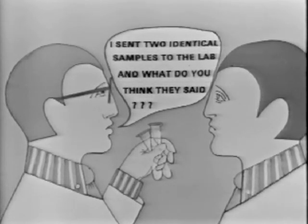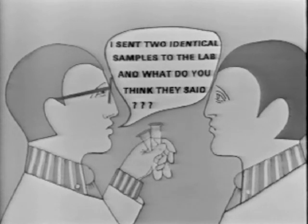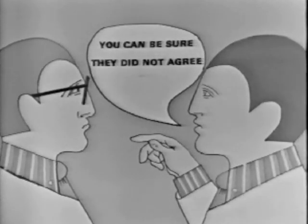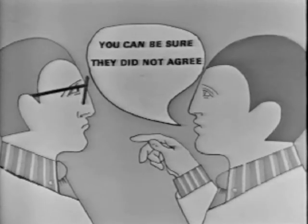But let's turn to a real scientific environment — a laboratory. Here we see two research scientists, and one says to the other, 'I sent two identical samples to the lab, and what do you think they said?' And his cohort replies, 'You can be sure — they did not agree.' We all know very well that there's an intrinsic variability natural to every data-taking process. Control the environment surrounding the data-taking though you will, repeated observations do not agree with one another. And that's what we're going to talk about in this lecture: how observations distribute themselves and the characteristics of the inherent variability of numbers as we record them.